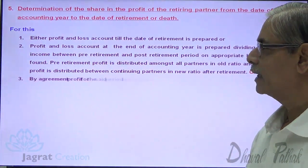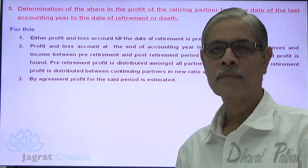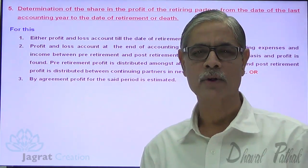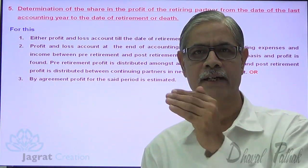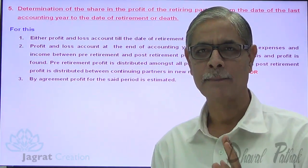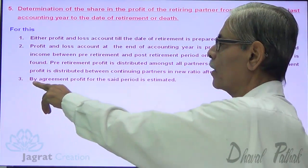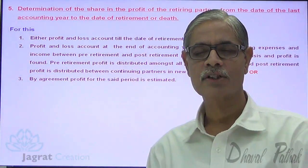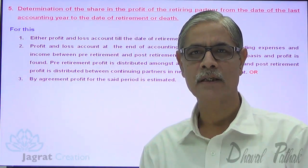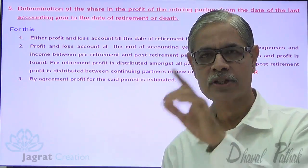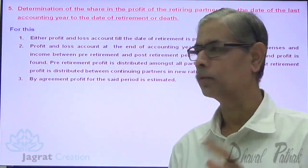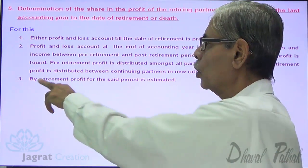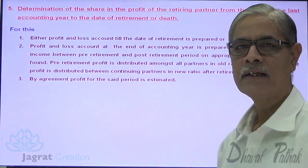The third option is that instead of preparing a profit and loss account till the date of retirement, or preparing it at year end with pre/post-retirement bifurcation, by agreement the profit for the same period is estimated. In our illustration, the partner retires on 30th April — four months have passed — so make an estimate of profit for four months by mutual agreement between the partners.